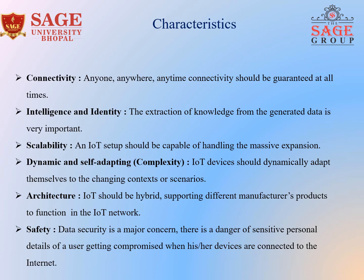The second characteristic will be intelligence and identity. The extraction of knowledge from the generated data is very important. For example, a sensor generates data, but the data will only be useful if it is interpreted properly. Each IoT device has a unique identity, and this identification is helpful in tracking the equipment and at times for query and status.